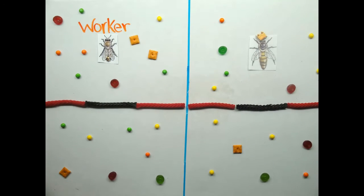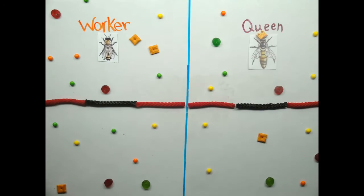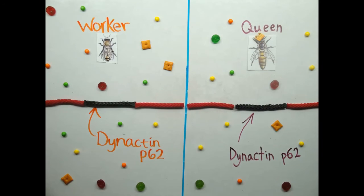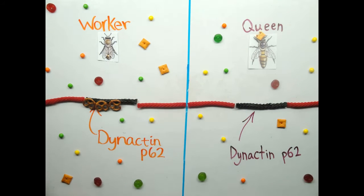Specifically, researchers observed reduced DNA methylation in the dynactin p62 gene. Dynactin p62 is known to respond to dietary changes.